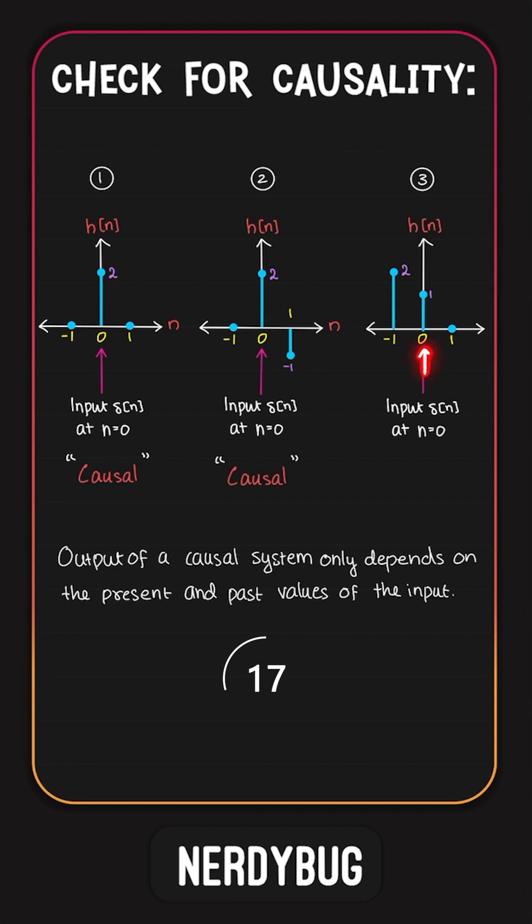In the third case, input is given at n equal to 0. Output is at n equal to 0 and n equals minus 1. The output at n equal to minus 1 depended on an input at n equal to 0 which is a future input. So the system is non-causal.